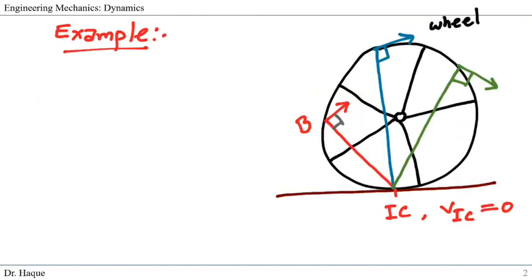The wheel at this moment is in touch with the ground. The point on the wheel touching the ground has zero velocity because the ground at that instant is not moving. At this point, we can say the velocity is zero, and we can take this point as IC.